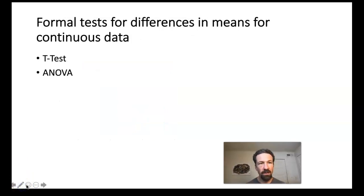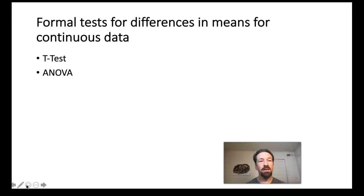While the heuristic bar graph method is a useful teaching tool, there are more formal ways to detect whether populations significantly differ for continuous data. Two very common tests are the t-test, which compares two groups, and the ANOVA test for comparing more than two groups. Be aware of these terms as accomplishing the same idea more formally than our bar graph analysis method.